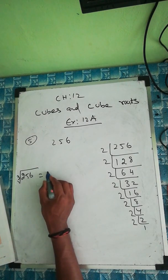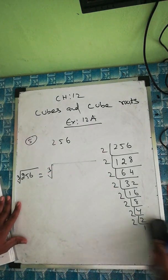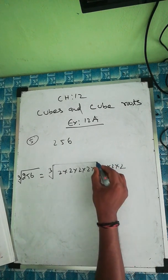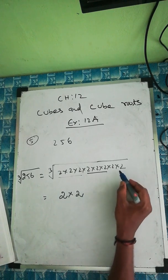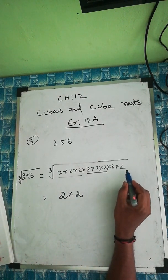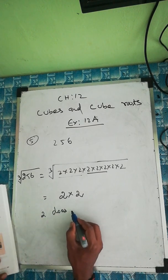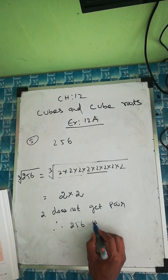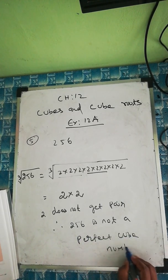For cubic, we take 3 numbers at a time and group them. So 3 twos we can take — that's one group. Again, 3 twos we can take — another group. But again, only 2 twos are left, and we need 3. So this is not a perfect cube. The 2 does not get the triplet pair. So therefore we can say 256 is not a perfect cube number.